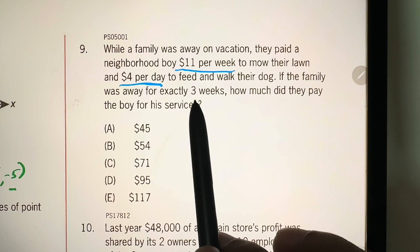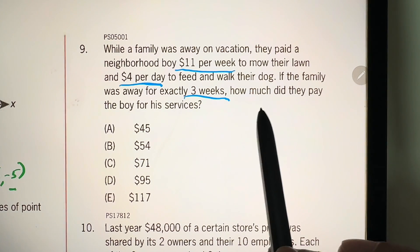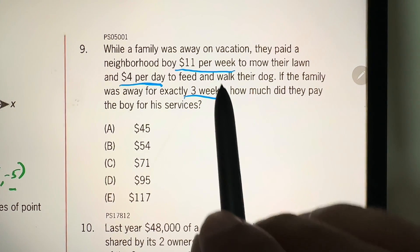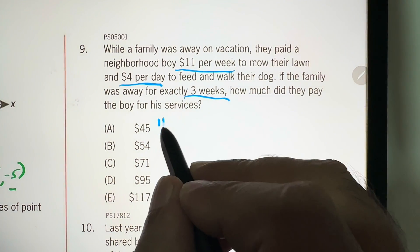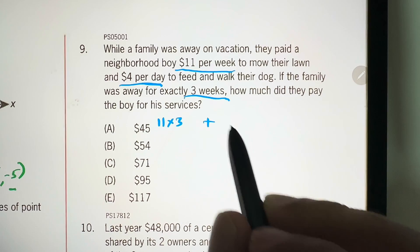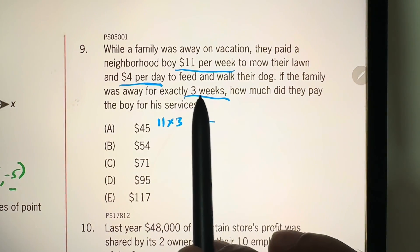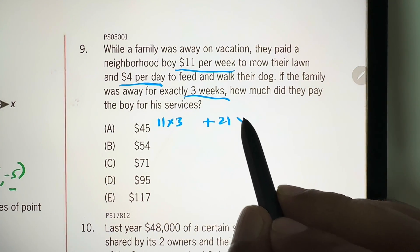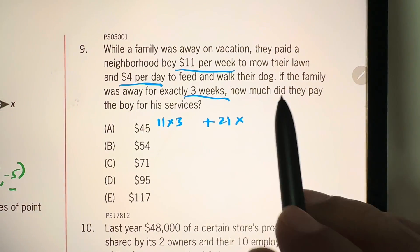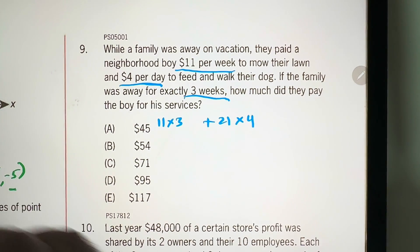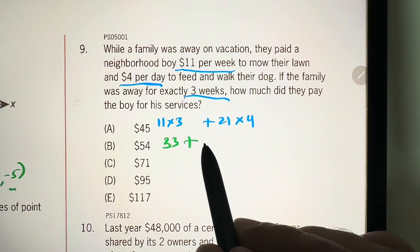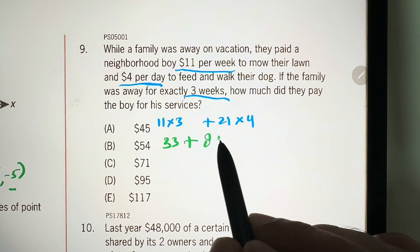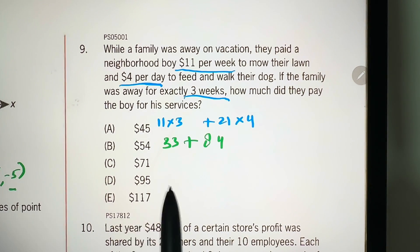If the family was away for exactly three weeks, how much did they pay the boy for his services? So, three weeks and $11 per week is 11 times 3 plus—now three weeks has 21 days, 21 times 4 days, $4 per day, so times 4. This is 33 plus, this is 4 times 2 is 8 and 4 times 1 is 4, 33 plus 84 is 117. That's our answer choice E.